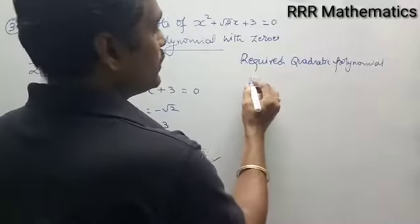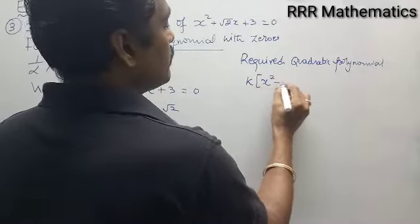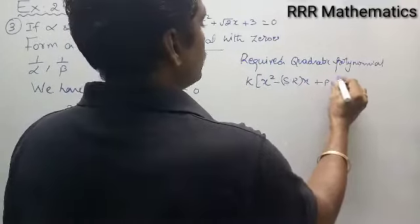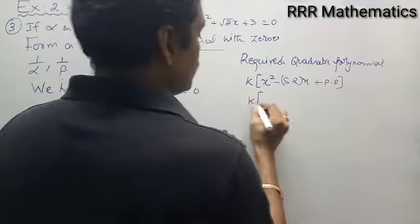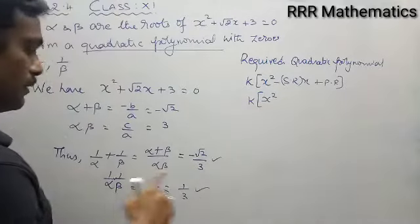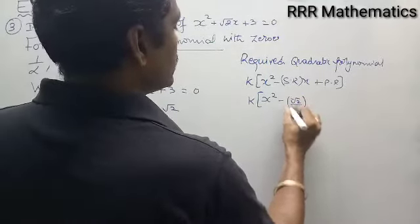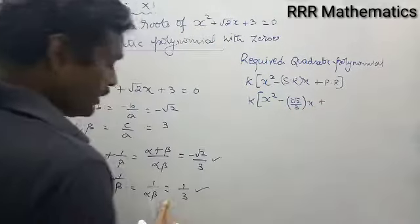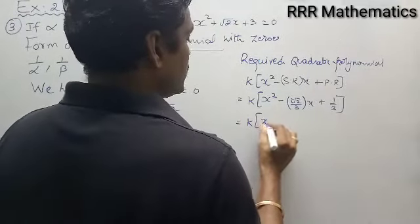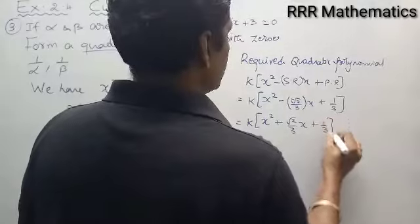What is the quadratic polynomial? It is k times x squared minus sum of the roots into x plus product of the roots. In this case, with constant k: x squared minus (minus root 2 by 3) into x plus 1 by 3, which gives k times x squared plus root 2 by 3 into x plus 1 by 3.